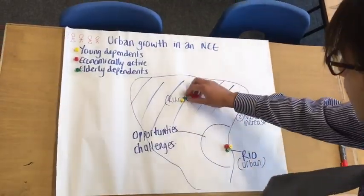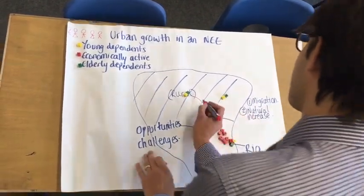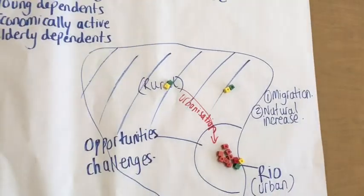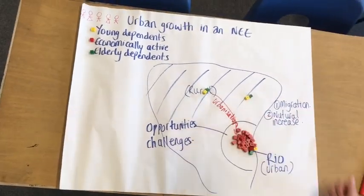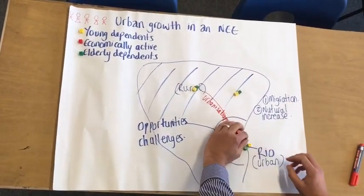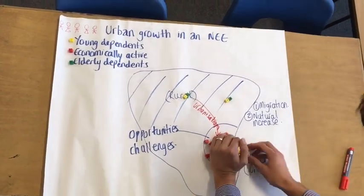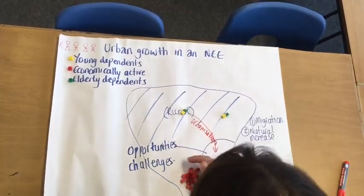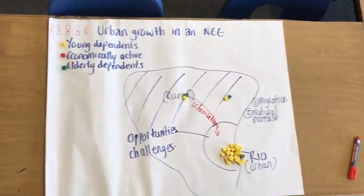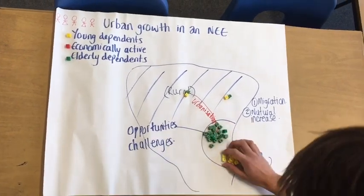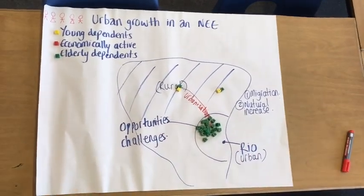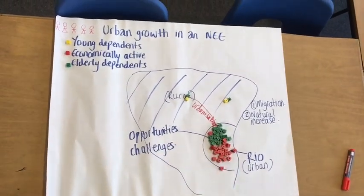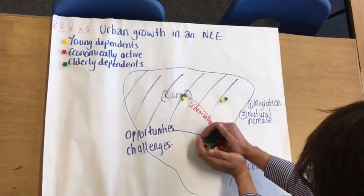In summary, rural to urban migration has caused the city to grow and more people to live in urban areas — this is urbanisation. Migrants have also moved from abroad; these are international migrants. Economically active people have had more children, increasing the young dependents — that's natural increase. Better healthcare means economically active people grow into old age and become elderly dependents. Young dependents will become economically active and have more children, further increasing the young dependent population.